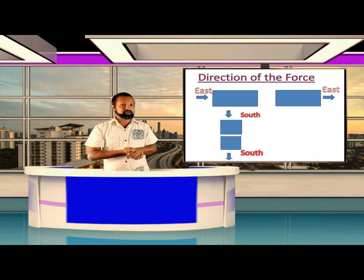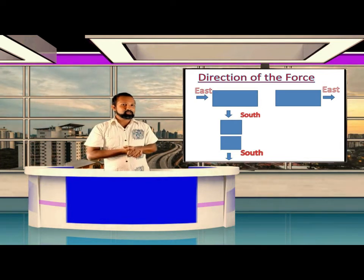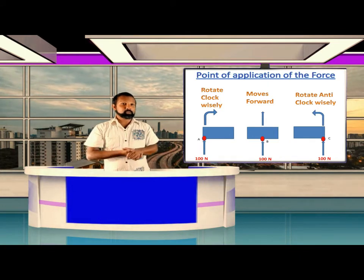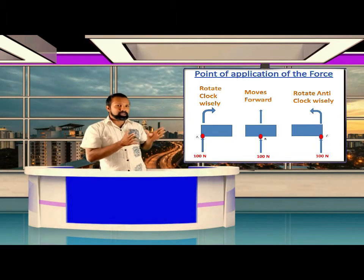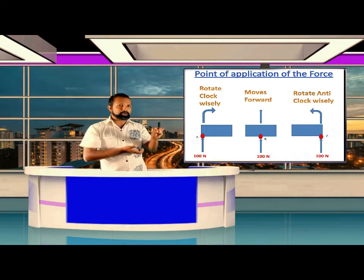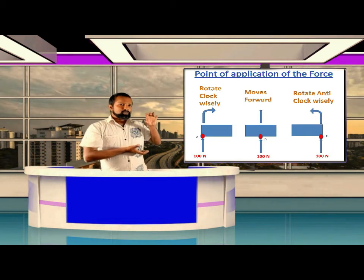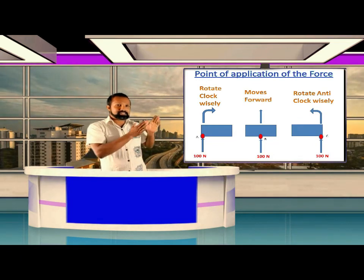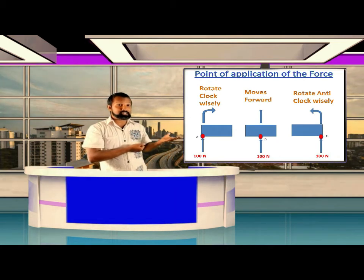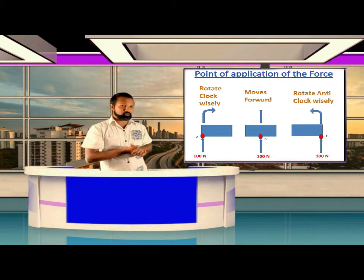The third factor is the point of application of force. As shown in this diagram, when we apply force on a particular point, that point is called the point of application of force. Even if we apply the same magnitude of force in the same direction, the effects may change due to changes in the point of application.